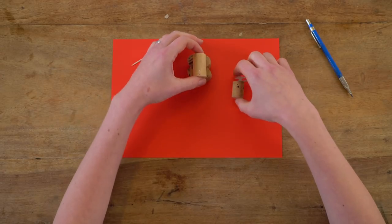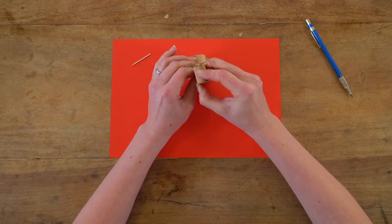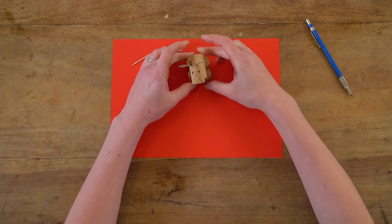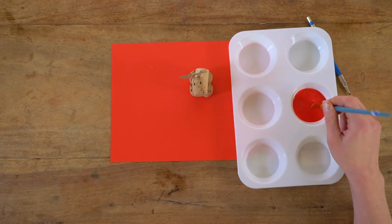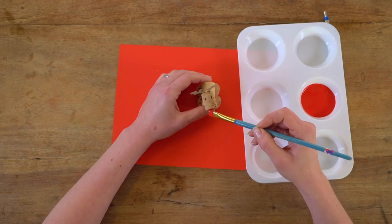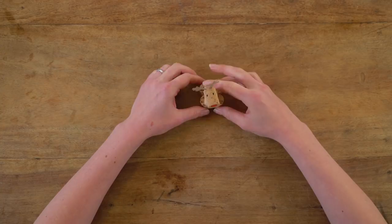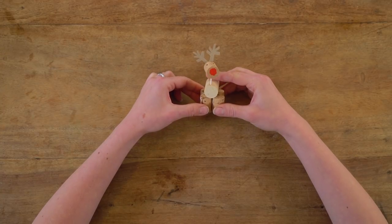Next you're going to stick the head onto the cocktail stick. Again ask a grown-up to do this for you. There's just one detail missing. A red nose. And there you have it, a reindeer from old corks.